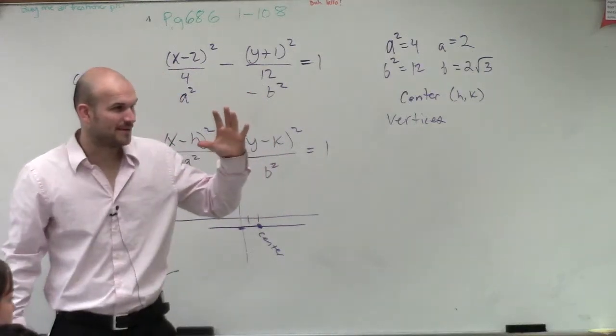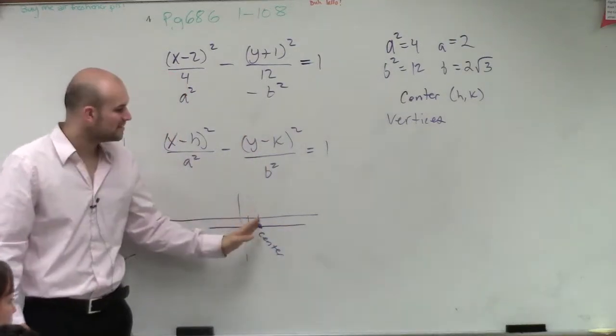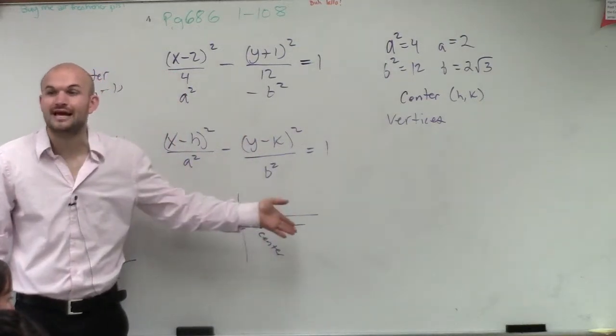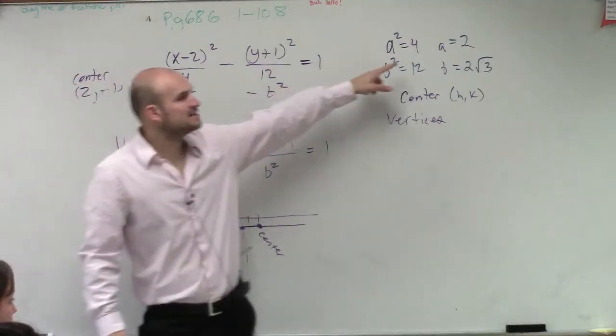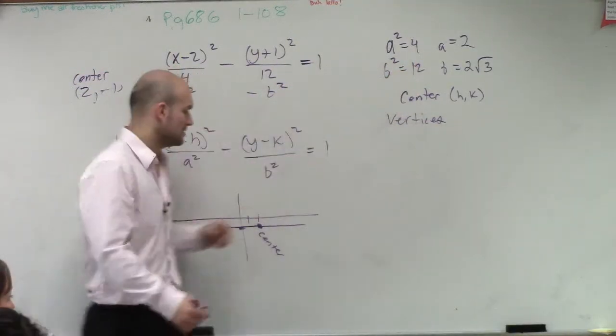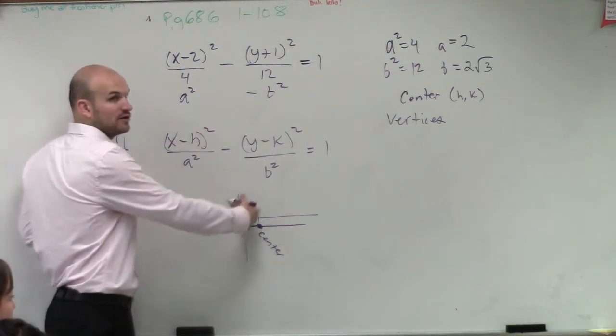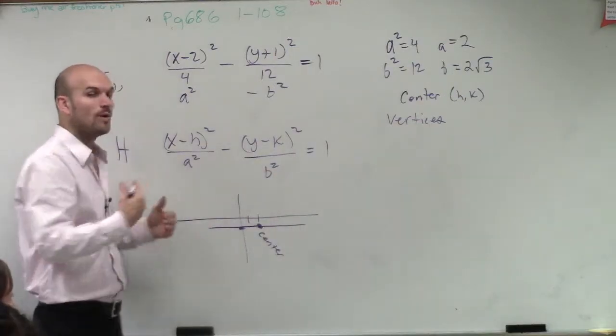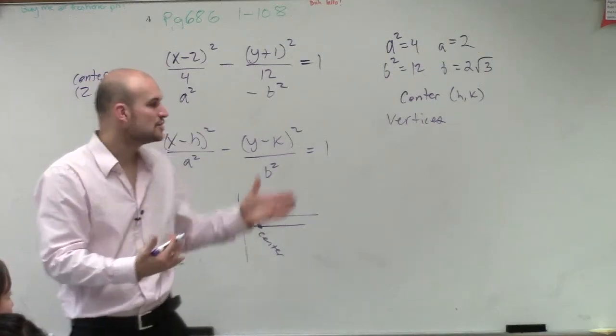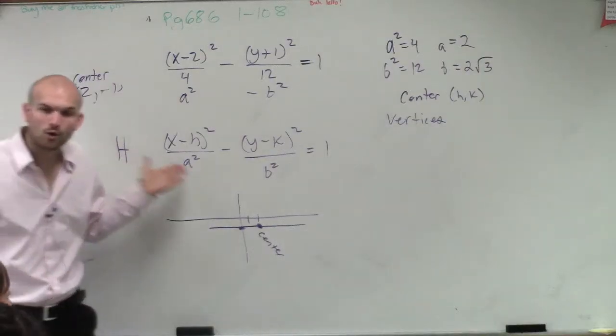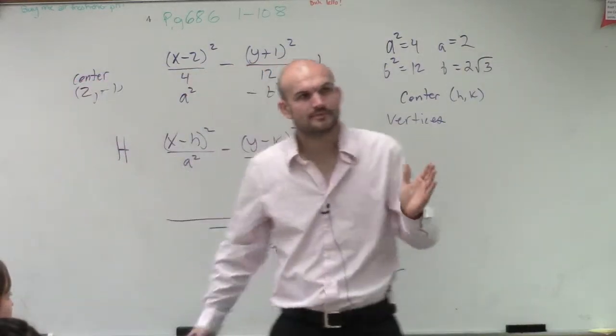First letter in the alphabet, a. The distance from the center to your vertices is your length a. So our length a is what? 2. So therefore, remember we have vertices to the right and to the left. Why is it to the right and left again? Because we determined from our equation that we have a horizontal hyperbola. All right?